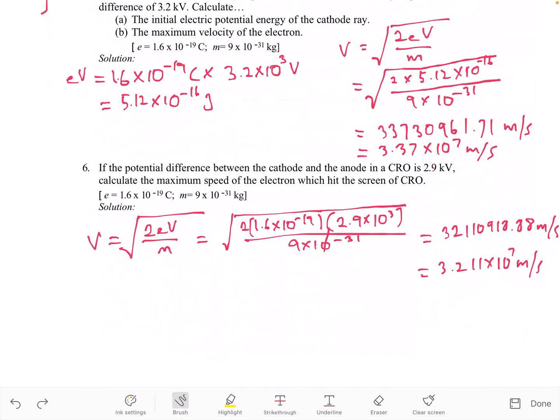If the potential difference between the cathode and the anode in a CRO is 2.9 kilovolt, calculate the maximum speed of the electron which hit the screen of CRO. Actually, you can apply the same method over here, so you can write again the formula and just simply substitute everything because everything is given in the question. Here is the calculator, you should get something like this, and then here is the approximation of the speed in standard form. This is my calculation, you can double check it, but the more important thing here is you know how to apply the formula based on the question given to you.